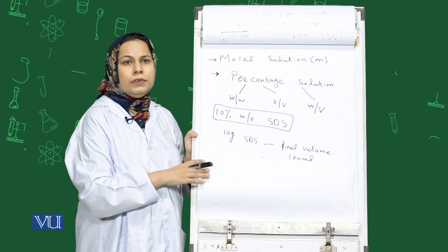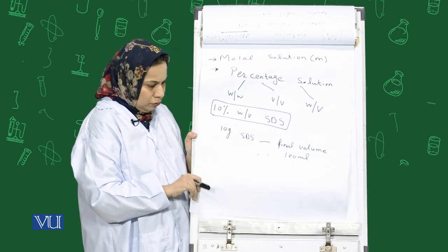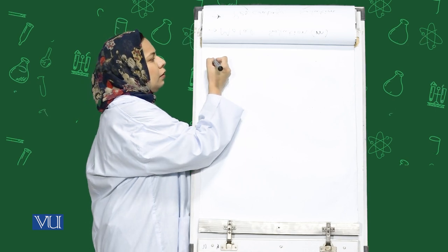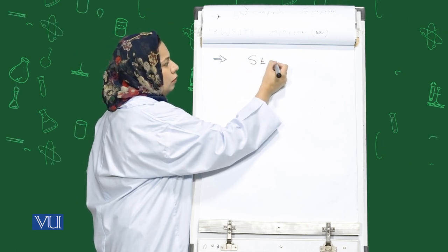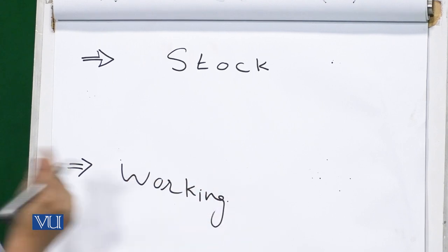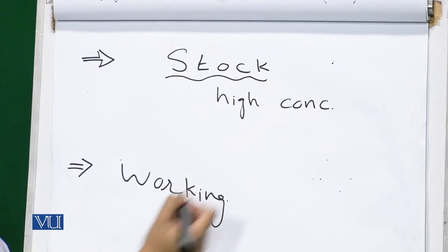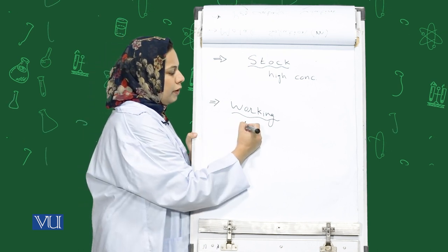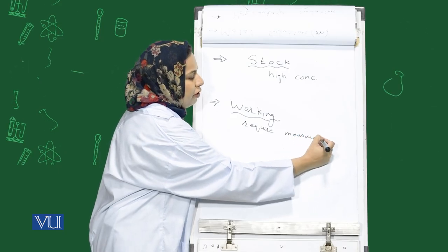This is a brief introduction of the types of solutions commonly used in the lab. Now, there is another terminology: stock solution and working solution. The solutions we have in the laboratory are of two categories — stock and working. Stock has high concentration and is useful for storage and further use, while working solution has the concentration required for our experiment.